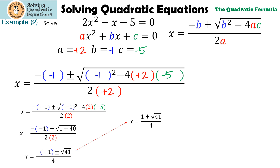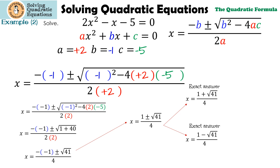The next step is to ask ourselves: is there a perfect square in 41? And no, there isn't. So we're going to split it up into our two answers: 1 plus the square root of 41 over 4 — that's the exact answer — and 1 minus the square root of 41 over 4. Many textbooks and online homework are going to ask you to round; for this one, we're going to round to the nearest ten-thousandths. Using a calculator, I get approximately 1.8508 for the first one, and negative 1.3508 for the second. These are not considered exact answers because they're rounded.